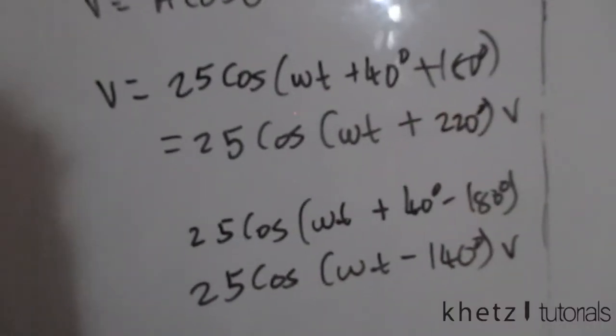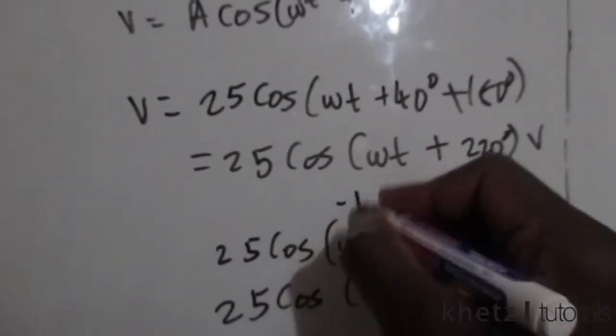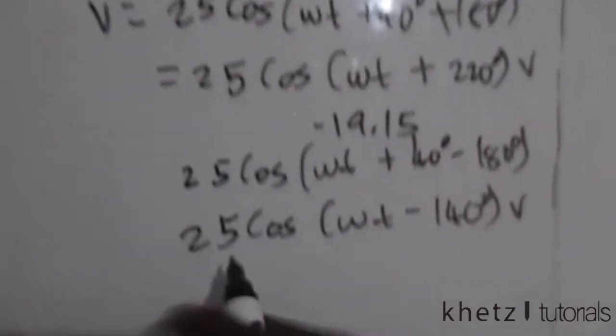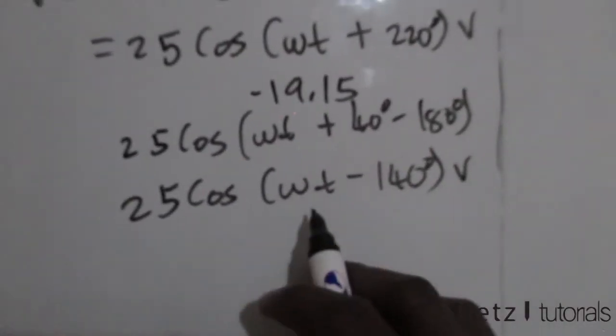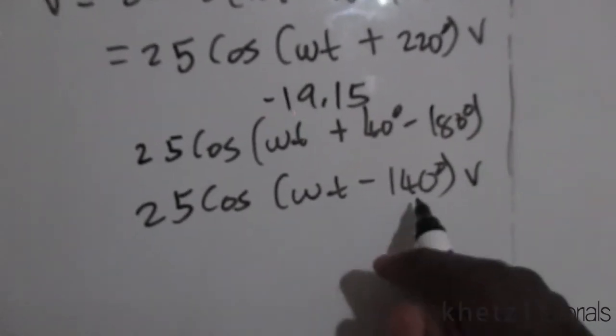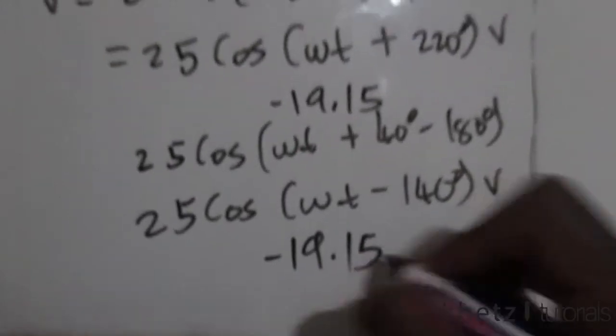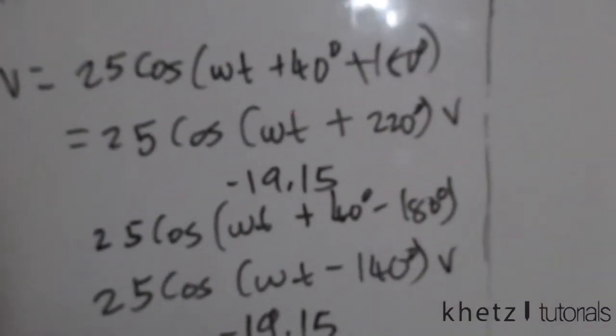You should get -19.15, and if you assume zero here as well and punch 25cos(-140°), you should also get -19.15, which confirms that these two are actually the same.